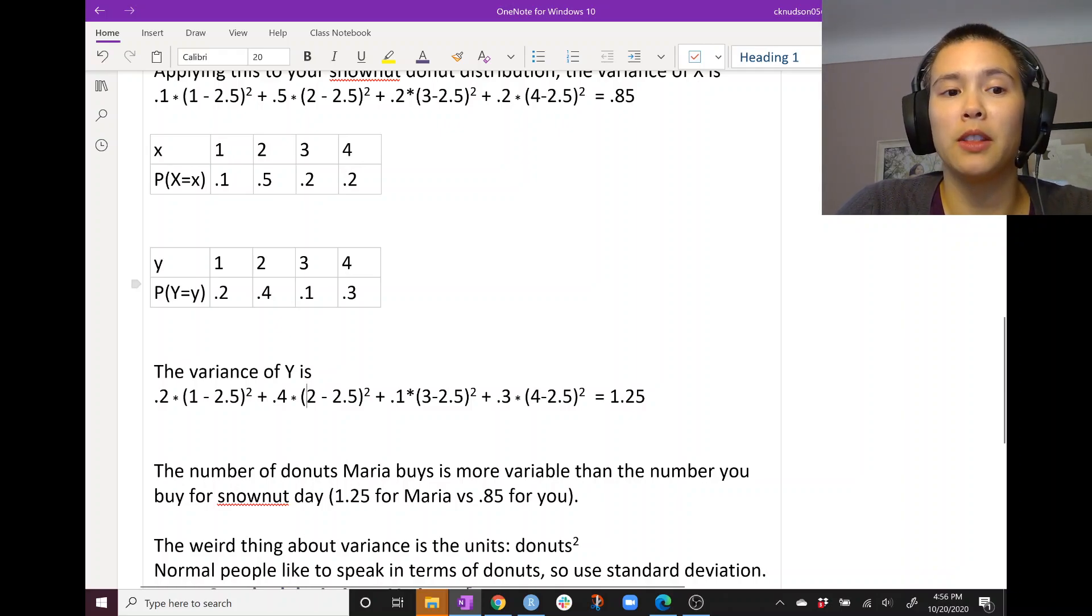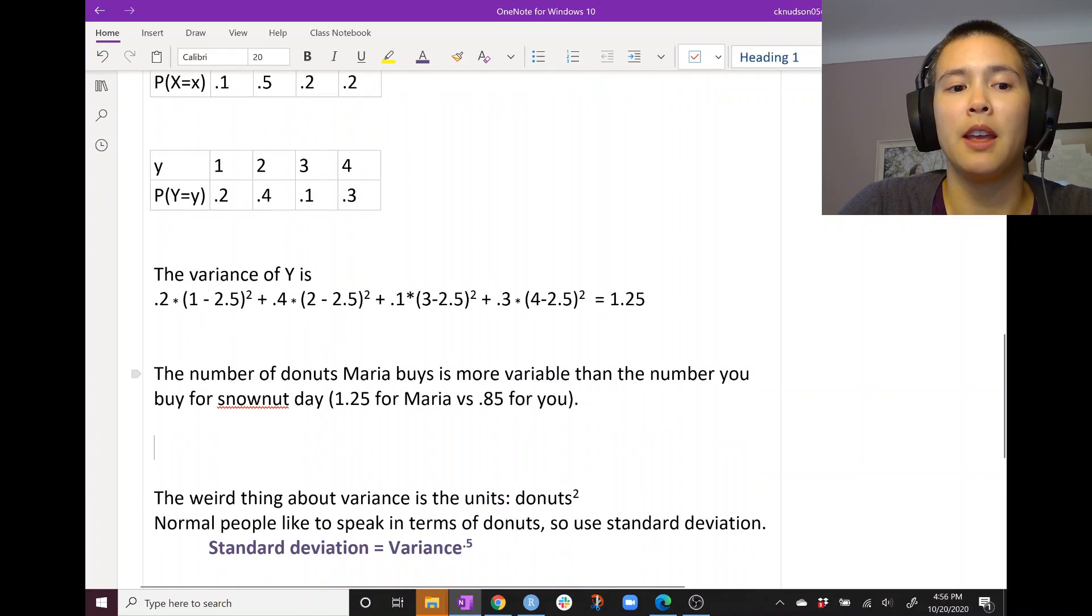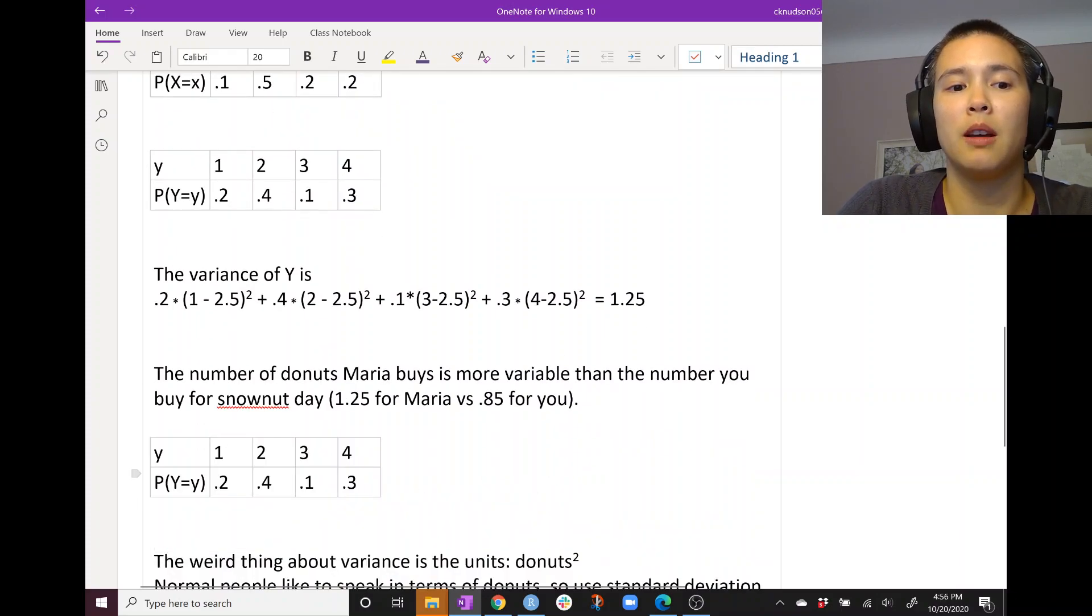And if we made this really extreme, let's say that another person either buys one donut or four donuts, then this person would have an even higher variance because they are more out on the extremes.